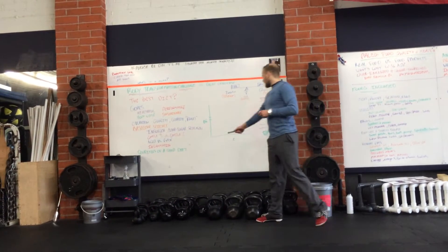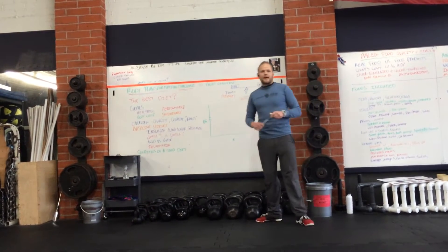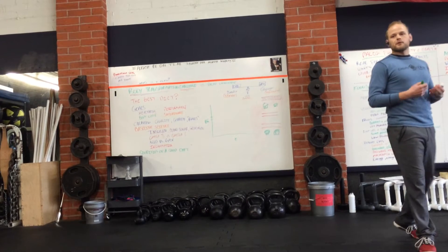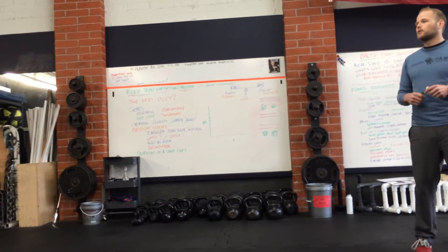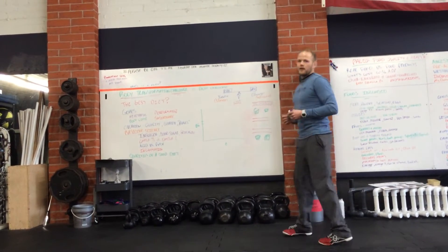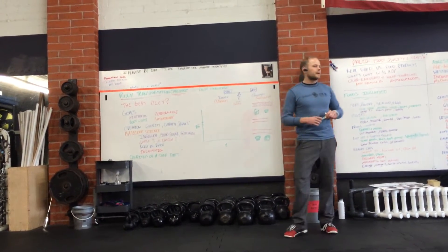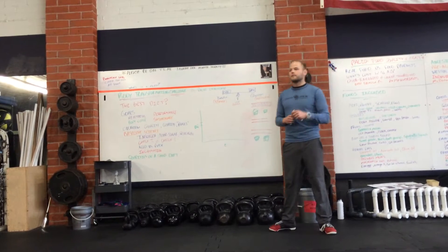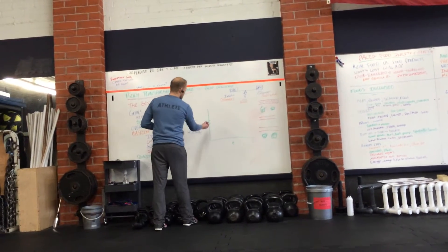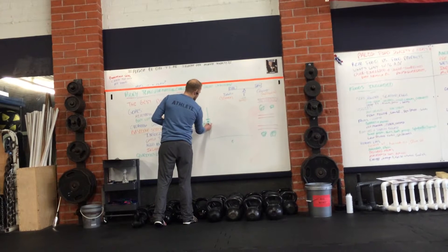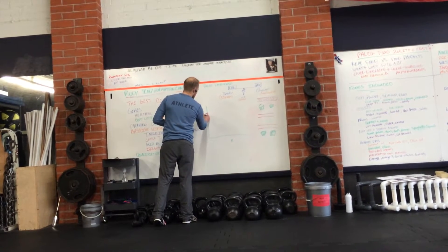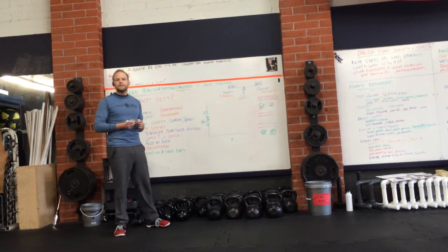On the X axis we have time, T. On the Y axis we have BG for blood glucose. We all have sugar in our blood right now — every single one of us. We have a range. We like it right in this range. We don't want it too low, and we don't want it too high.